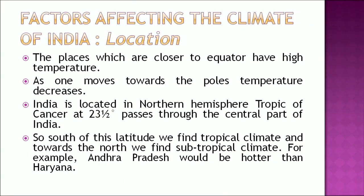What are the factors affecting the climate of India? The first factor is location. Places which are closer to the equator have high temperature, and as one moves towards the poles, the temperature decreases. India is located in the northern hemisphere and the Tropic of Cancer passes through its central part at 23 and a half degrees. So south of this latitude we find tropical climate, and towards the north we find subtropical climate. For example, Andhra Pradesh would be hotter than Haryana.